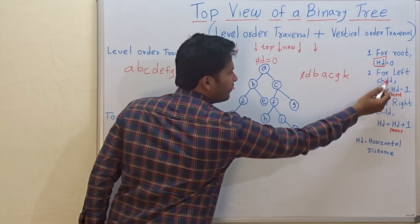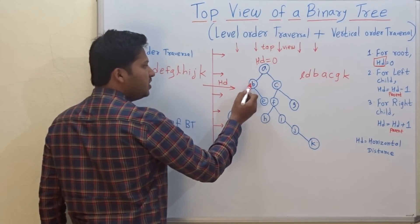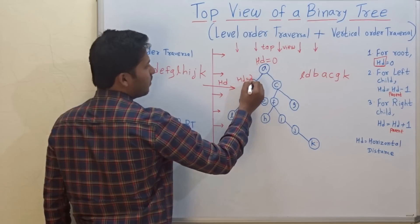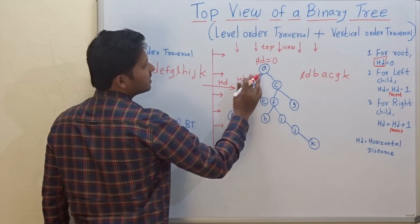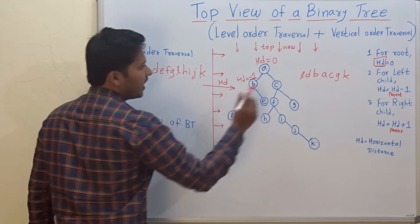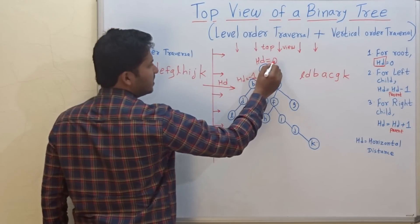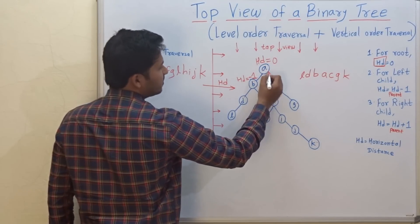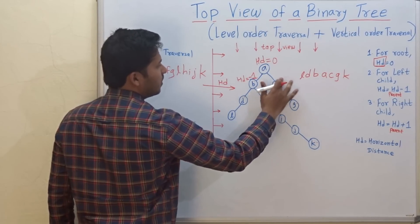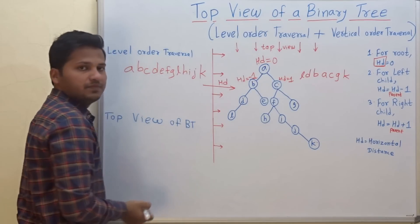The second rule says that for a left child, HD is equal to HD of parent minus 1. So the left child B has HD = 0 minus 1, which is minus 1. The third rule is for the right child, HD is equal to HD of parent plus 1. So for C, the right child, HD will be 0 plus 1, which is 1.